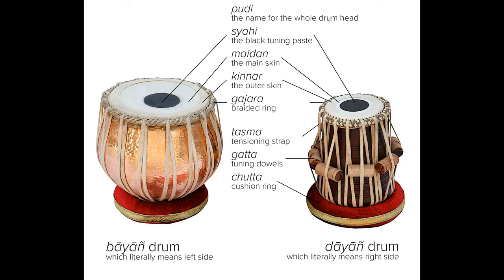Gajara: woven strap — the strap that holds the pudi in place on the shell. Chadi: area outside sayahi — the area between the kinner and sayahi, contributing to various tonal qualities. Gatha: wooden blocks — used for tuning, similar to the dayan.